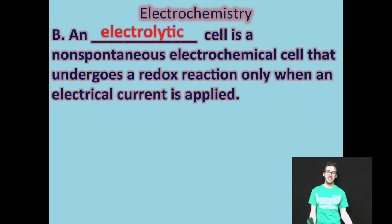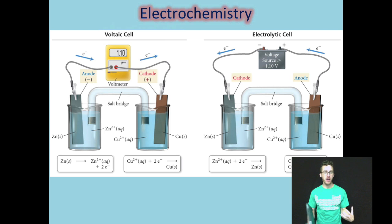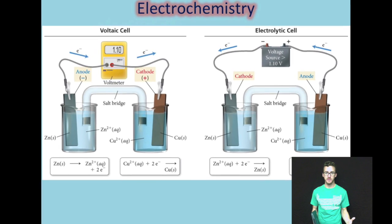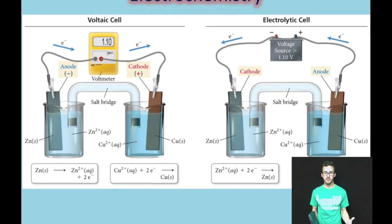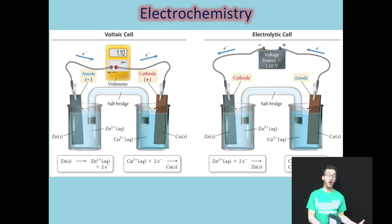So let's define an electrolytic cell. It is a non-spontaneous electrochemical cell that undergoes a redox reaction only when an electrical current is applied. So let's take a quick moment and stare at the image on your screen or in your notes to think about what we already understand from voltaic cells and how an electrolytic cell is different.